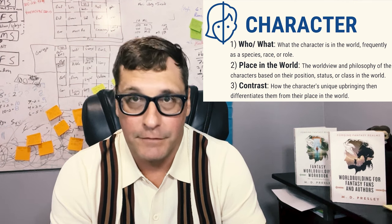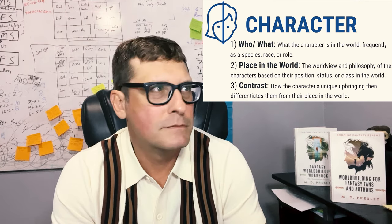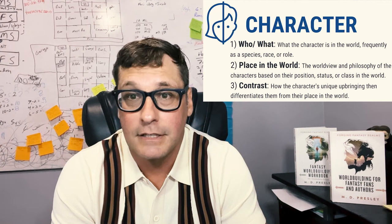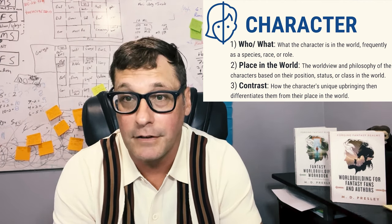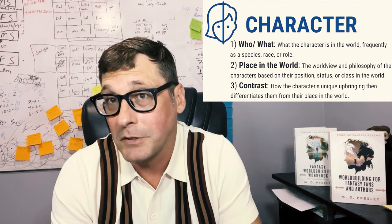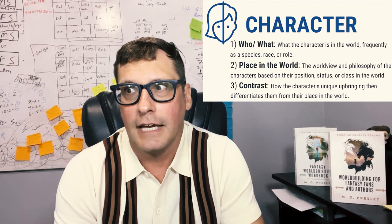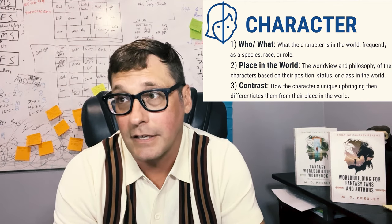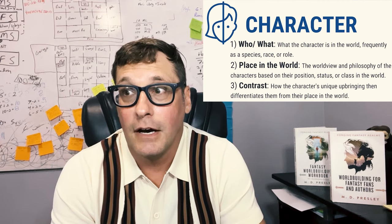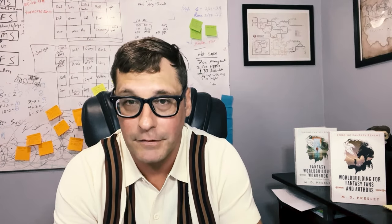The third character category is contrast — how characters are different from what they're supposed to be given their place in the universe. Theon Greyjoy is a great example: he's a Greyjoy but was raised by Starks, so he's different from the rest. Katara being a waterbender in a place without waterbenders. Tyrion as a not-very-good Lannister. Luke and Harry as farm boys not raised to be Jedis or wizards. Aragorn raised by elves instead of being the king he's supposed to be. You've got to include these world-building details because they affect the character in contrast to what you're expecting of them. All the great characters are walking contrasts.